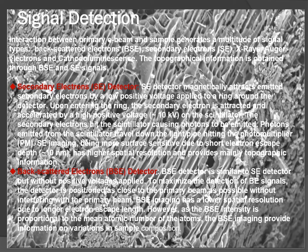The backscatter detector is similar to the secondary detector but without positive voltages applied. To maximize detection, the detector is positioned as close to the primary beam as possible without interfering with it. Backscatter detector imaging has lower spatial resolution due to a longer electron escape length; however, since backscatter intensity is proportional to the mean atomic number of the atoms, backscatter imaging provides information on variations in sample composition.